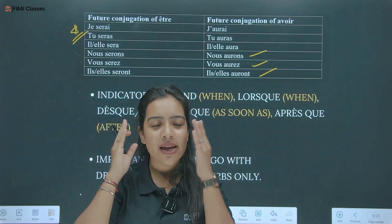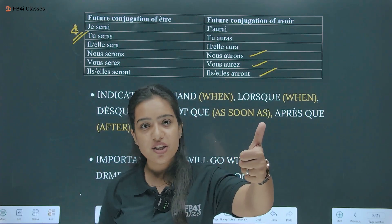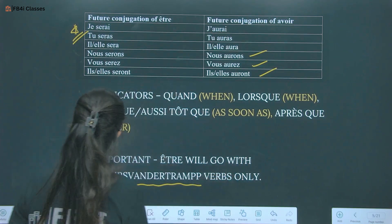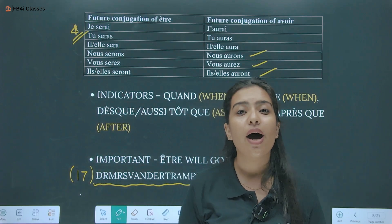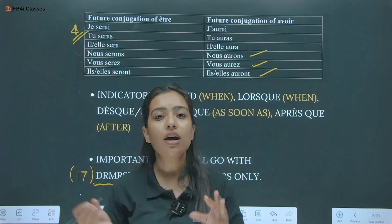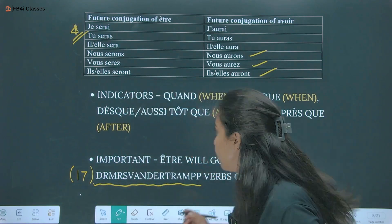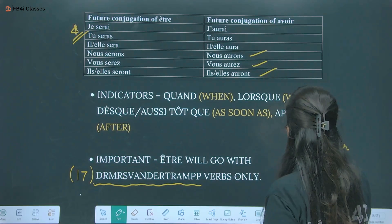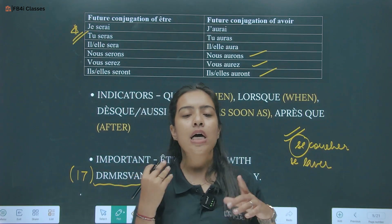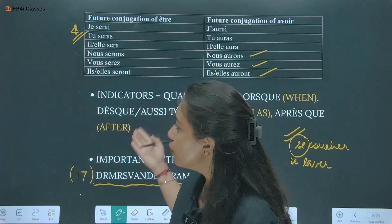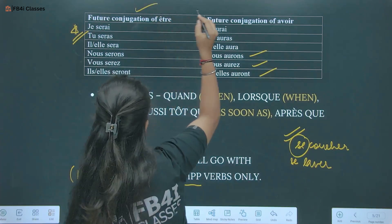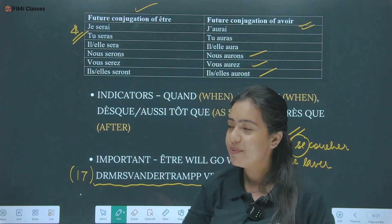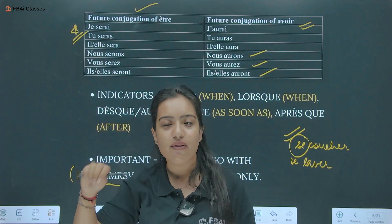Important rule: être always goes with DR MRS WONDERTRAMP verbs — our 17 VIP verbs which always take être as their favourite auxiliary verb. Être also goes with pronominal verbs like se coucher, se laver, se promener, se brosser — verbs with se, actions we do on ourselves. All those verbs take être. All remaining verbs take avoir.